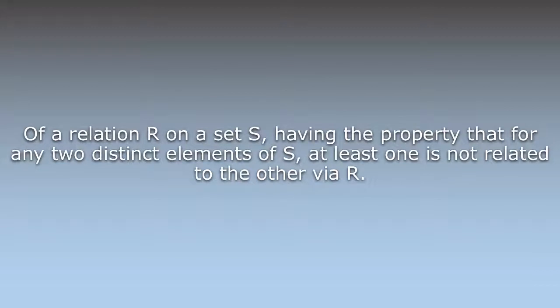Antisymmetric: of a relation R on a set S, having the property that for any two distinct elements of S, at least one is not related to the other via R.